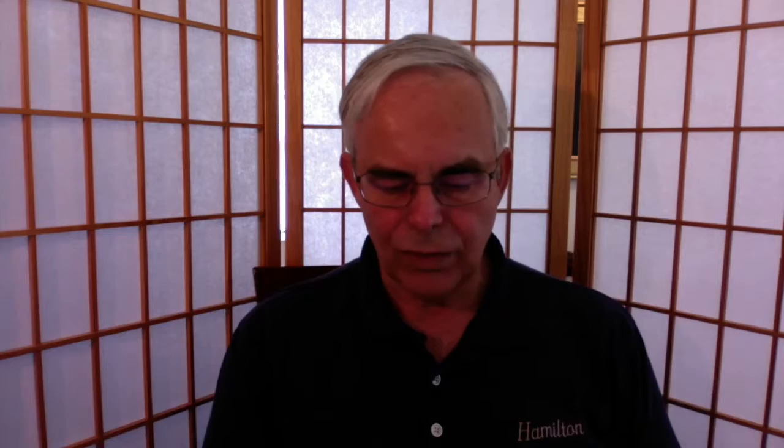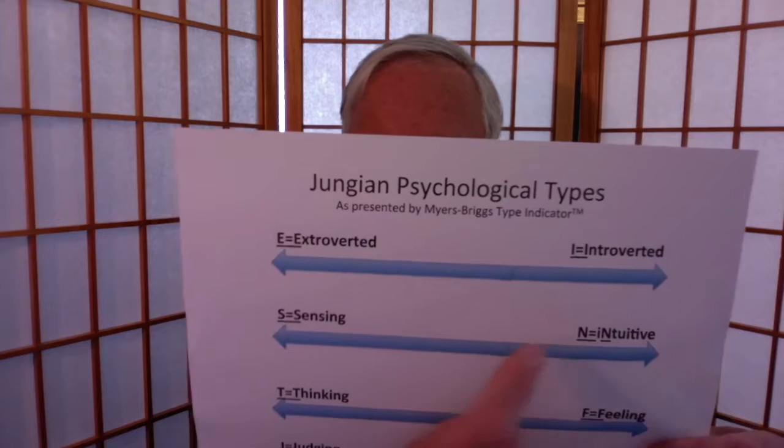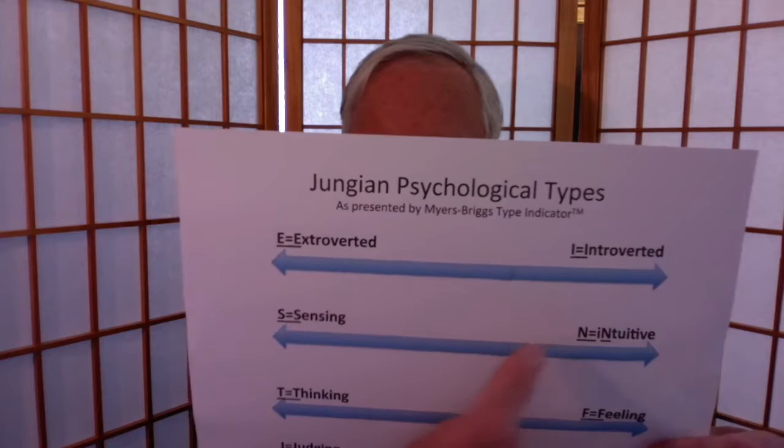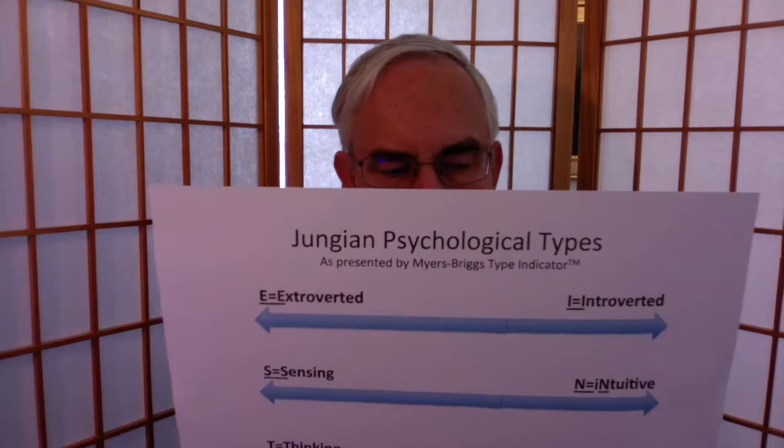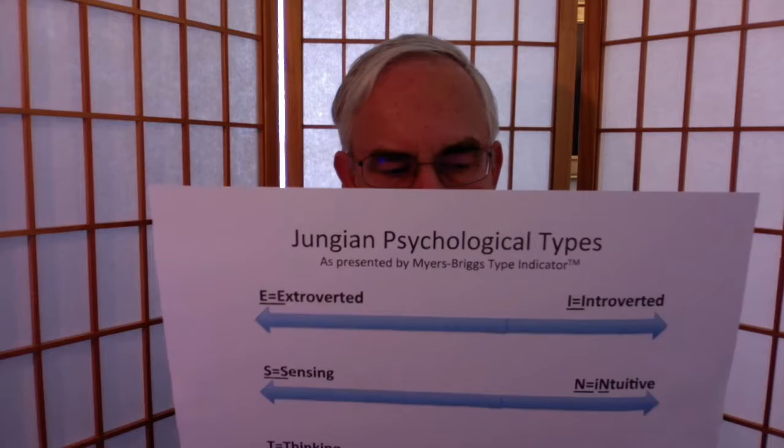Based on these basic personality scales one can determine whether you can have success in a marriage, or how to plan a project. In mission planning it's very useful to start with a sensing person, then have an intuitive person describe the global implications of your project, then have a thinking person give you all the logic, and finally have a feeling person figure out the emotional implications for the world.